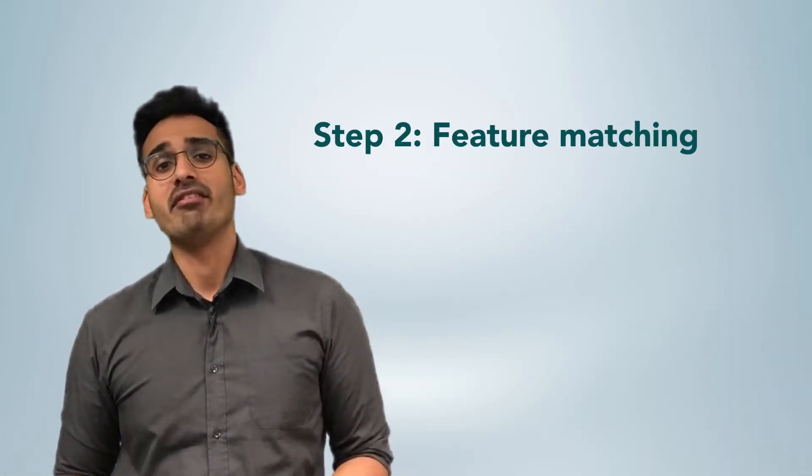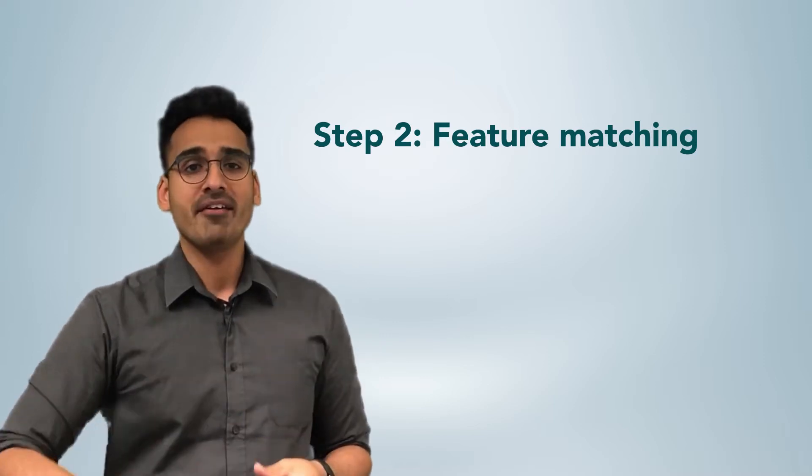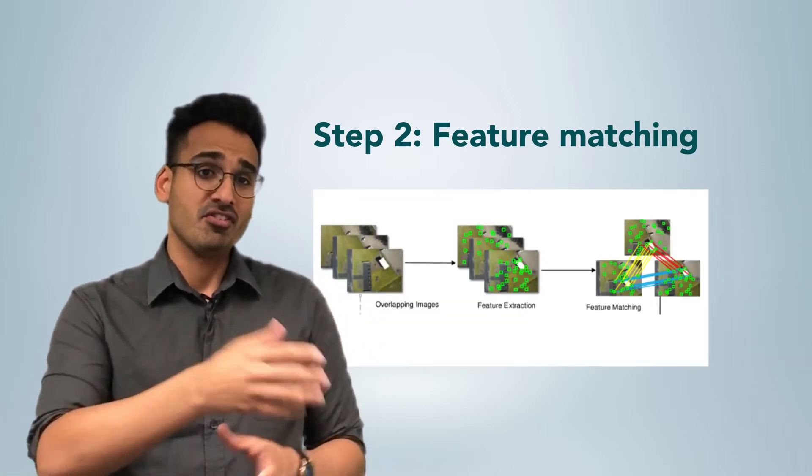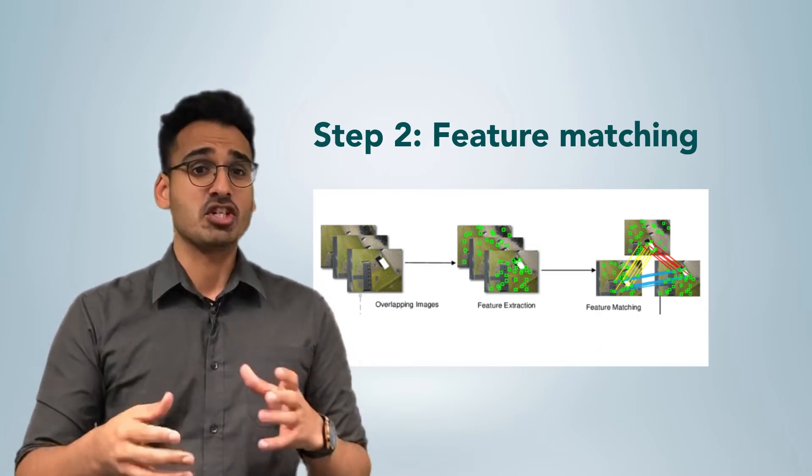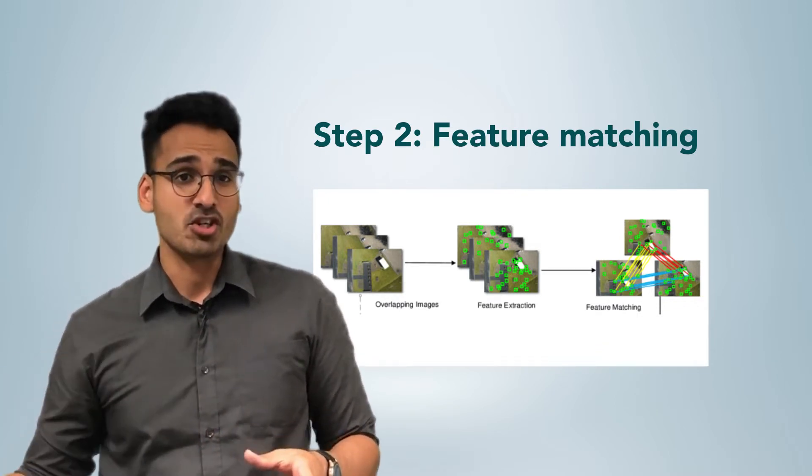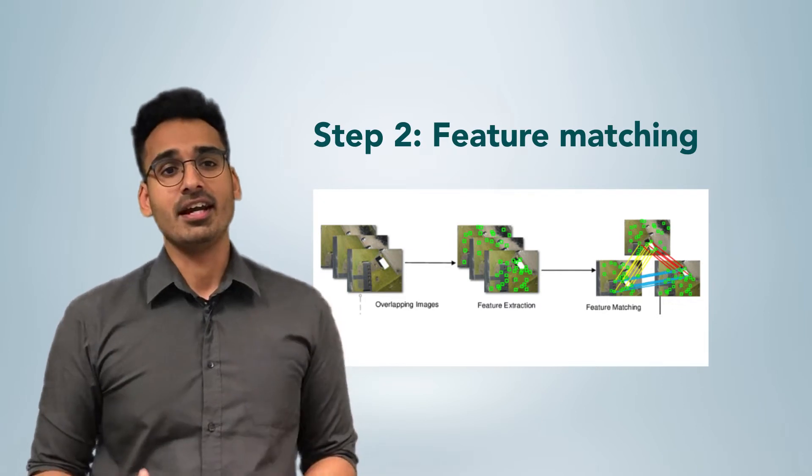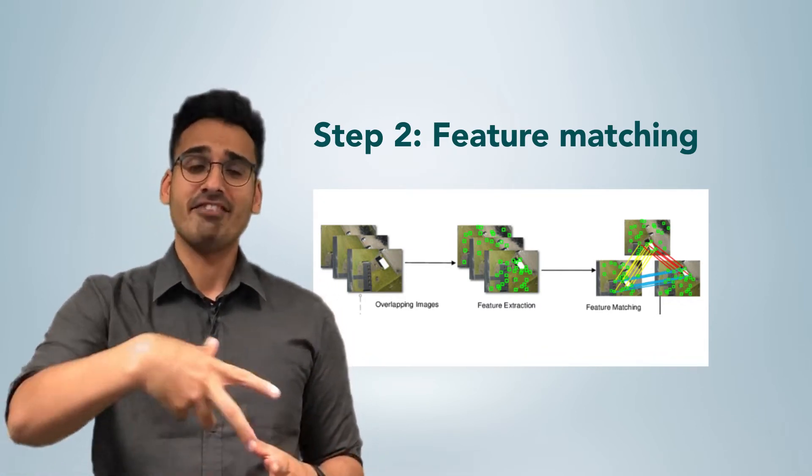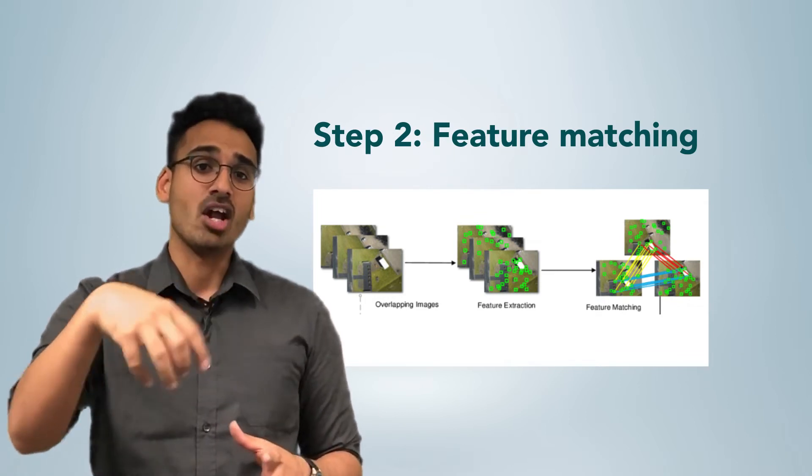This is done by taking every feature X and comparing it with all the other features in other images to see if the same feature can be found in different images. A quality score is calculated using a wide range of software techniques, and image pairs with the same feature are then found and aligned.